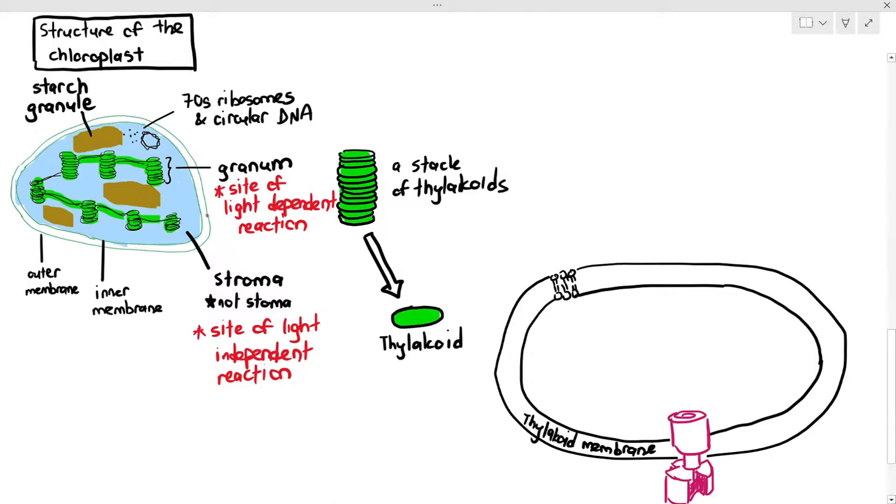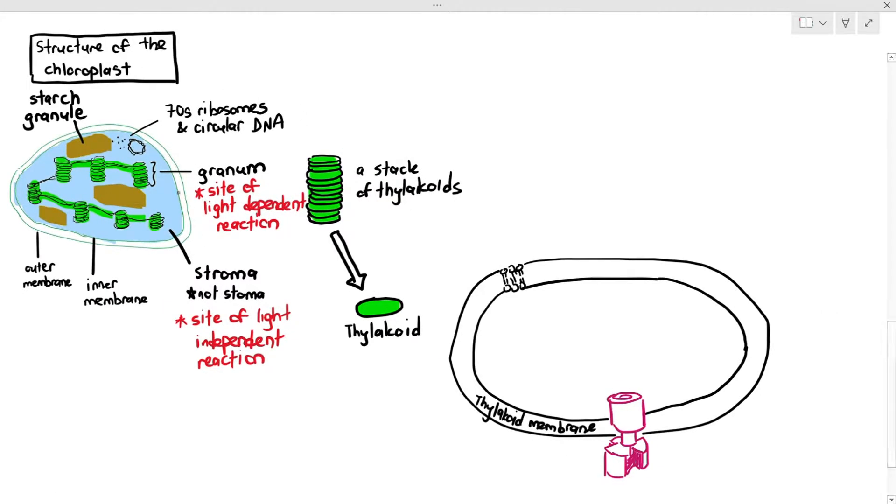What does that enzyme look like, by the way? That enzyme is actually the ATP synthase. Yes, the thylakoid has its own ATP synthase. And by the way, what's the function of ATP synthase? It's supposed to make ATP.